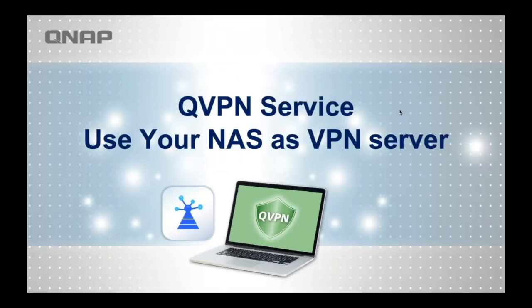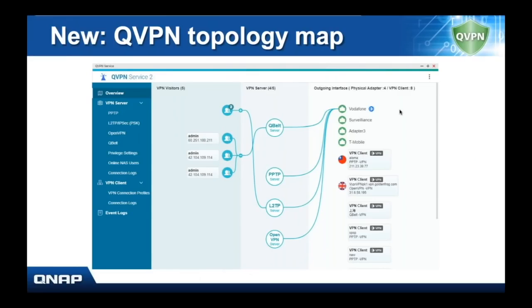Our QVPN app allows you to use your NAS as a VPN server. This is what the QVPN app looks like. Over here you can see these are the different users connected to VPN. These are the different VPN protocols — you can see these three users are using the QBelt protocol and these two users use L2TP. You can see that all that VPN traffic is being funneled through this particular ethernet port. So this NAS has four ethernet ports but all the VPN traffic is going through this port. It's also worth mentioning that your NAS through this app can become a client of a different VPN server somewhere else, and over here you can see these are the different VPN servers that you are a client of.